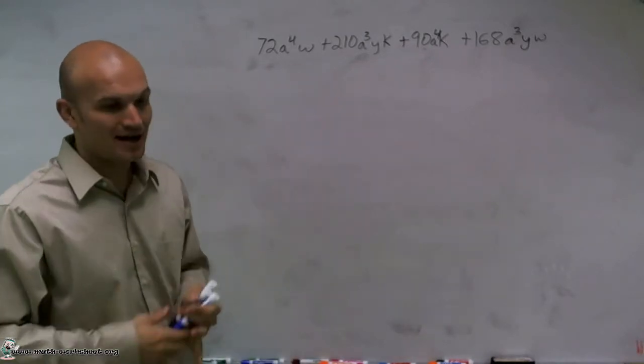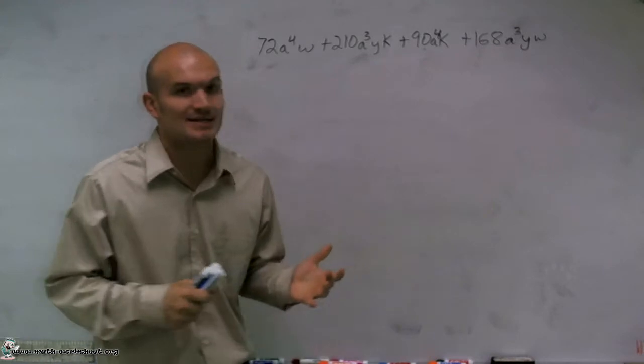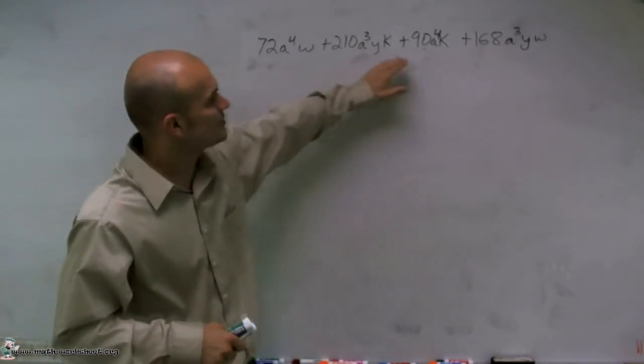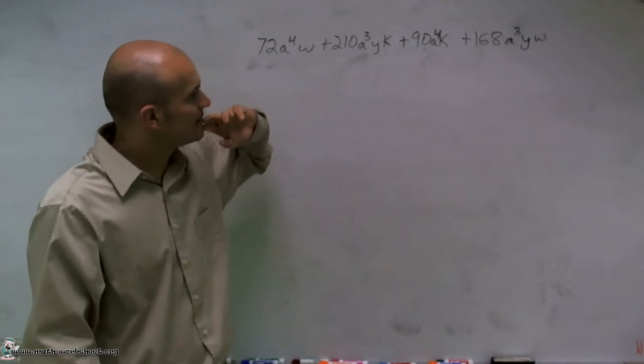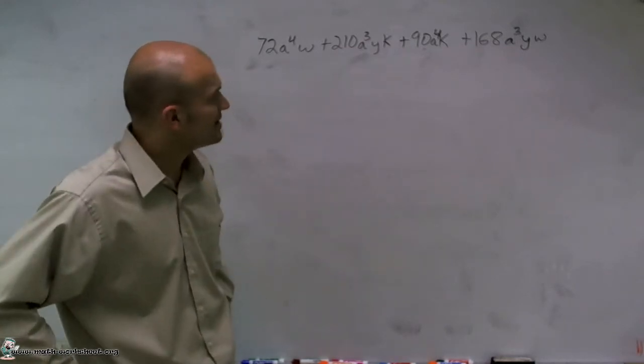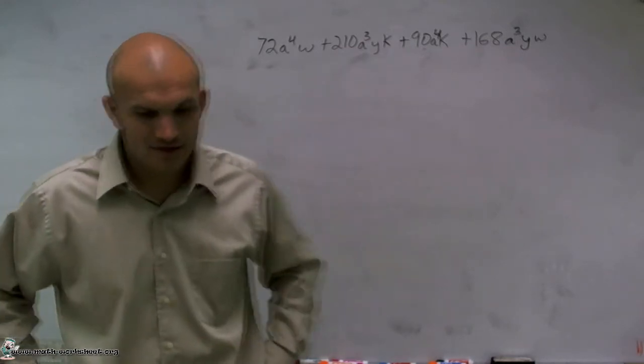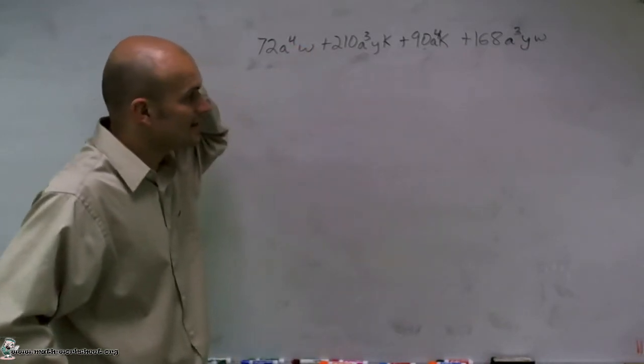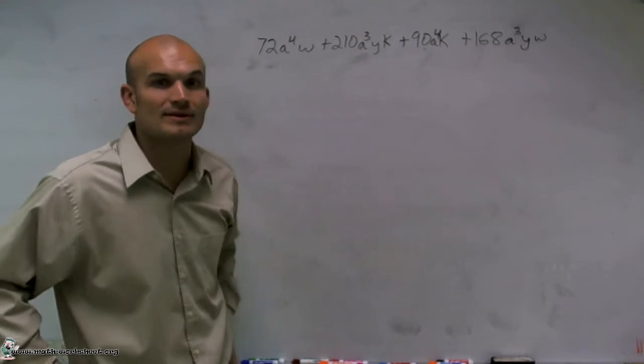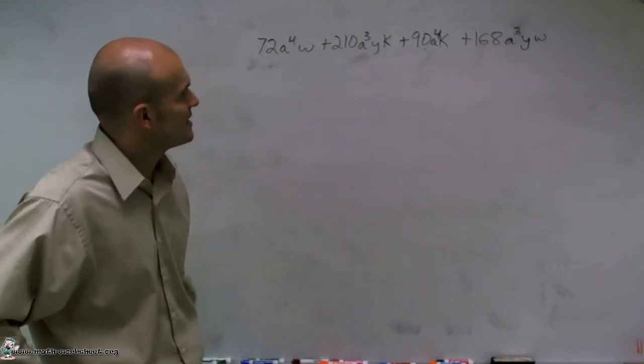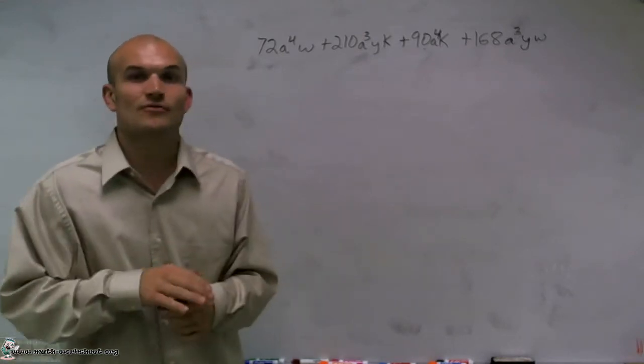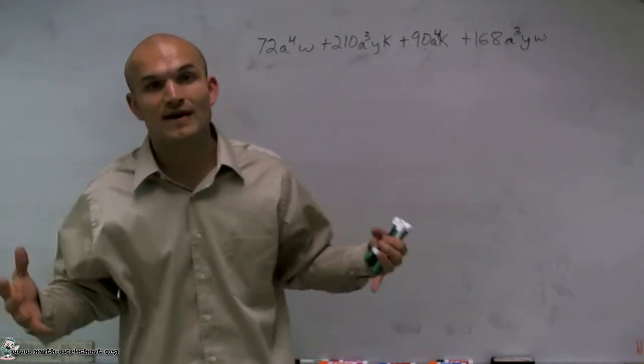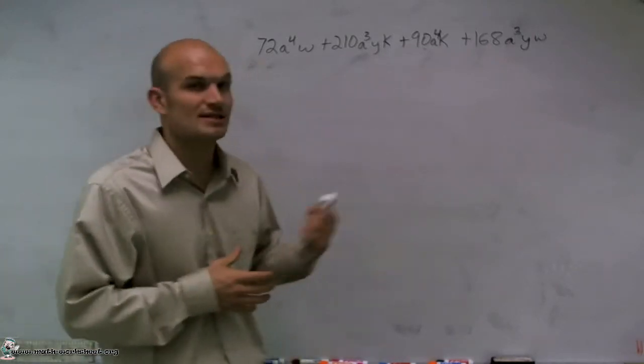To factor this expression, remember the first thing we always want to look at is seeing if you can factor out a GCF. And all the numbers do have a GCF that I can pull out. But before I get into that, I look at all my letters and I'm actually going to go a different route with this. I'm going to factor out the GCF right at the end. What I'm going to do is factor by grouping first, and then I'll factor out any leftover GCF I have.